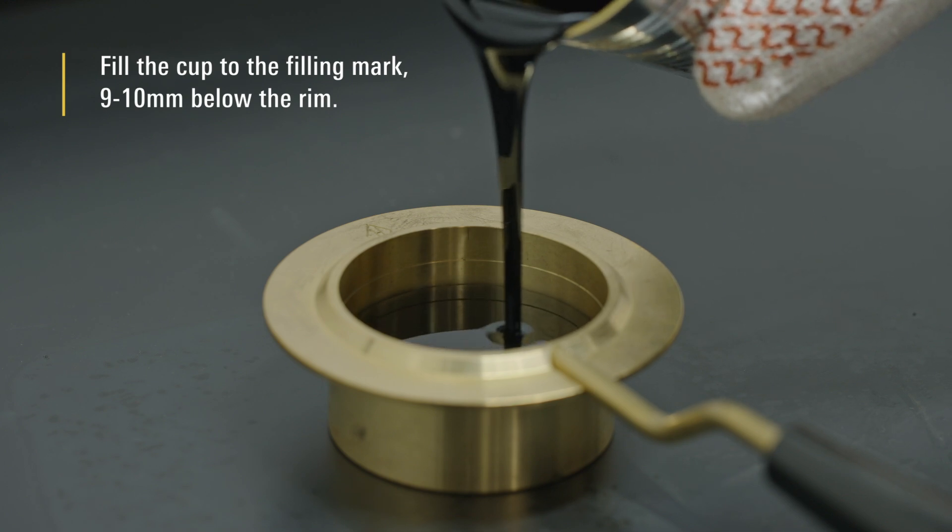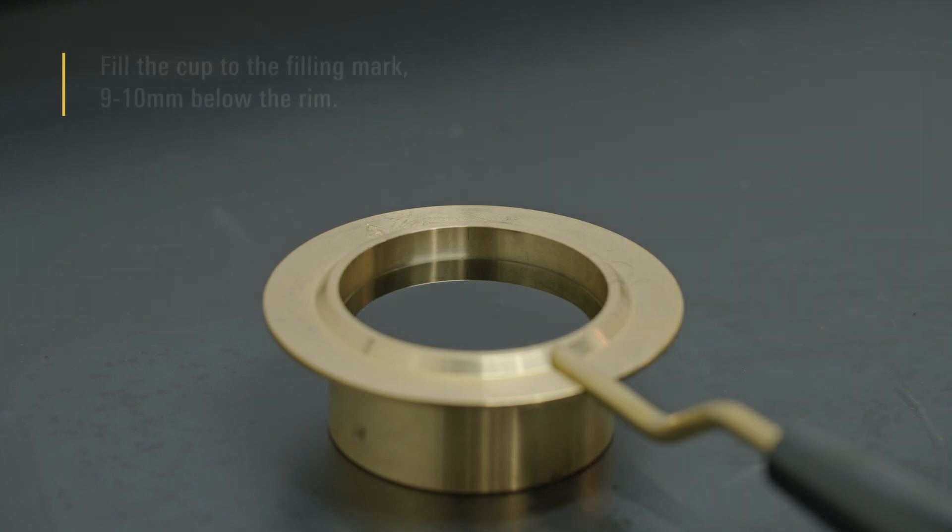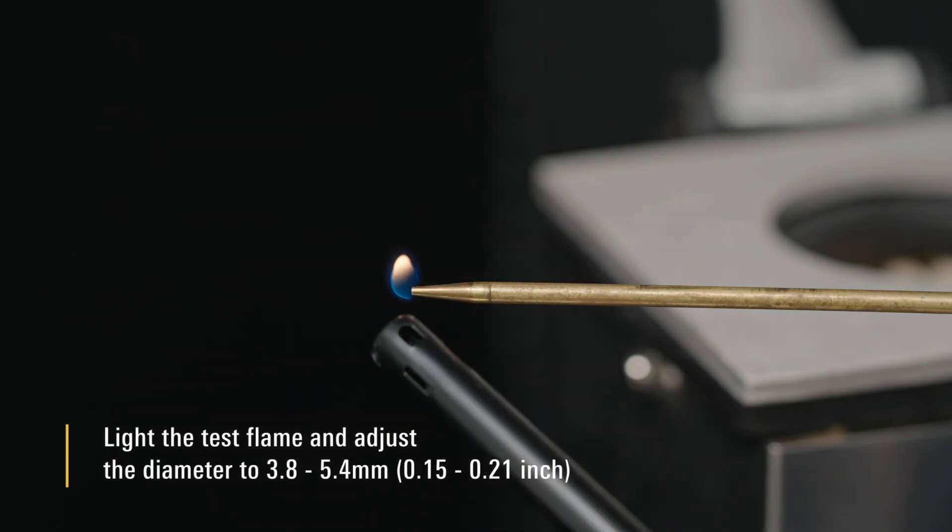The cup can be filled away from the tester if the temperature measuring device depth has been set before the test. Light the test flame and adjust the diameter to 3.8 to 5.4 mm.